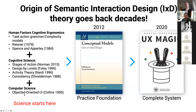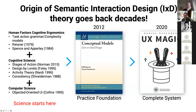Then there was a movement in the 90s on object-oriented UI, led by a guy named David Collins — there's no science in that part, but there is some similarity. And then in 2012, Jeff Johnson and Austin Henderson published a book called Conceptual Models, which is the foundation of semantic interaction design. Both Jeff and Austin were on the original Xerox PARC team that invented the graphical user interface. They deal with the grammar level, which you'll understand by the end of this presentation. What I tried to do is make this into a complete system, both as a teaching pedagogy and a methodology. Jeff wrote the foreword for the UX Magic book — he's a good friend of mine.